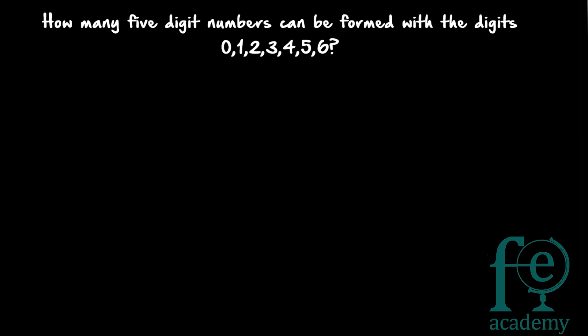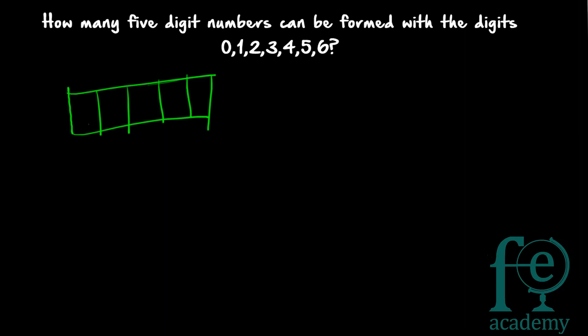Second question: how many 5-digit numbers can be formed with the digits 0, 1, 2, 3, 4, 5 and 6? Whenever 0 comes, you have to consider it as a special case. You are given 7 digits and asked to form 5-digit numbers. The 10,000th place must be considered separately because 0 cannot go there. So you can use any one of 1, 2, 3, 4, 5 or 6 — giving 6 ways to arrange the 10,000th place.